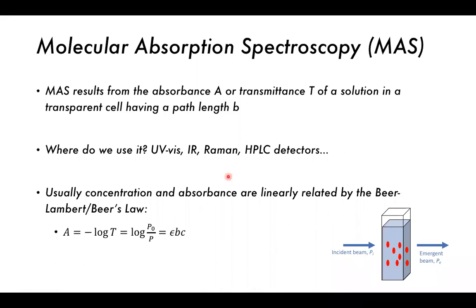Where do we use this kind of molecular absorption spectroscopy? In a great many different forms of spectroscopy. We use it in UV-vis spectroscopy, IR, Raman, HPLC detectors to name but a few. And typically we have a concentration-absorbance relationship which is linear, related by the Beer-Lambert or Beer's Law.